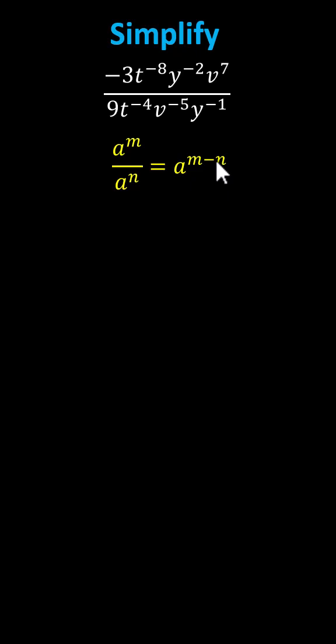Working from left to right, we first have the fraction negative three-ninths, and then we have t to the power of the difference of negative eight and negative four.